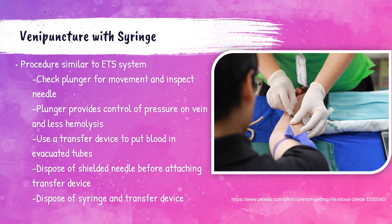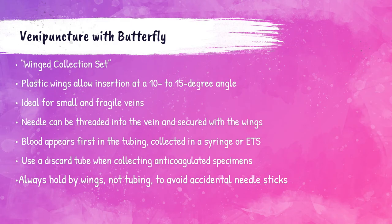Before using a syringe, the phlebotomist should pull the plunger back and then push it completely back in — otherwise it's too difficult to draw the blood out. A syringe can be used for fragile veins that can't withstand the pressure from the evacuated tube system. A transfer device can be attached to transfer blood to vacuum tubes after the needle is removed. The syringe needle and transfer device should be disposed of in the sharps container. The winged blood collection set, also known as a butterfly needle, is inserted at a 10 to 15 degree angle and is ideal for small fragile veins. It can be used with a syringe or an evacuated tube system, and the phlebotomist must have a discard tube to remove the air from the tubing so it doesn't affect the volume in the tube.